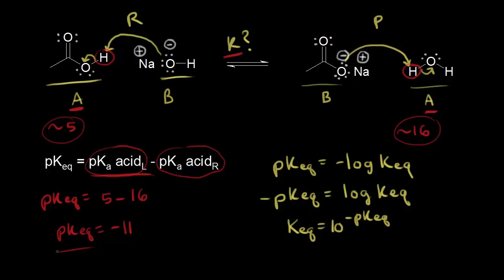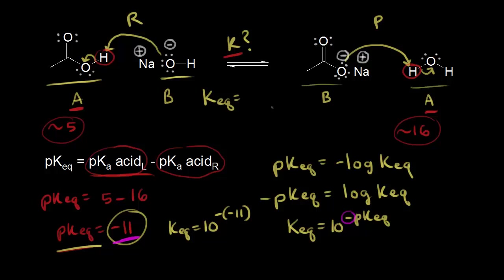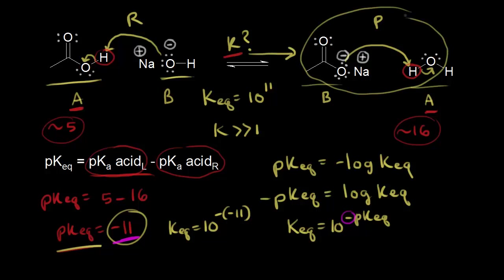We plug our pKeq of negative 11 into the equation. So Keq equals 10 to the negative pKa, which was negative 11 — giving us 10 to the negative (negative 11), which is 10 to the 11th. The equilibrium constant for the forward reaction is 10^11. When K is much greater than one, at equilibrium we have way more products than reactants — so the equilibrium lies to the right.